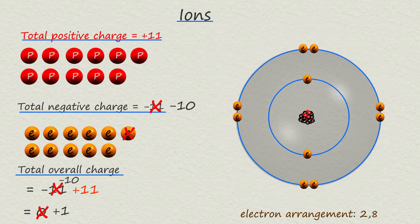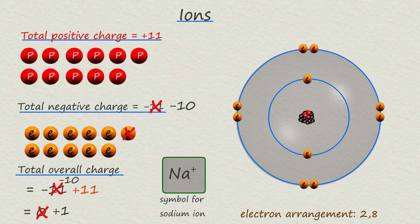After losing its outer electron, there will now only be 10 negatively charged electrons in the electron shells, but there will still be 11 positively charged protons in the nucleus. This means the sodium atom now has a positive charge — we call atoms with charges ions. The sodium ion will have a charge of plus one because there are more positively charged protons than negatively charged electrons.